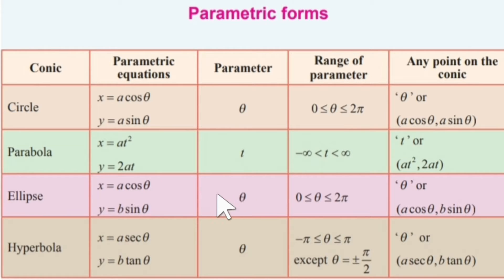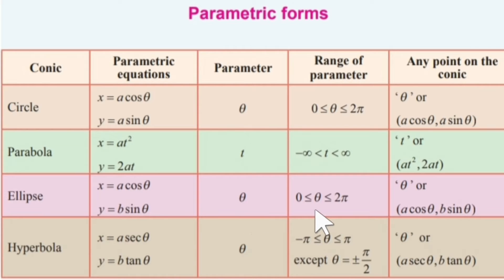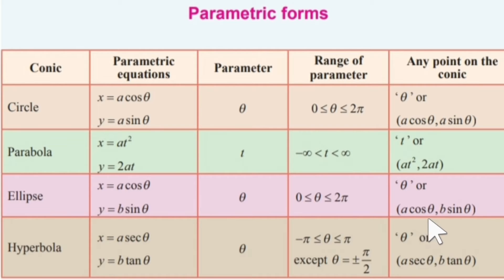Next, for the ellipse, the parametric equation is x equal to a cos theta and y equal to b sin theta. Here the parameter is theta and theta lies in the closed interval 0 to 2 pi. Any point on the ellipse is of the form a cos theta, b sin theta, where a cos theta is the x coordinate and b sin theta is the y coordinate.